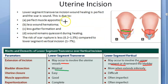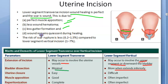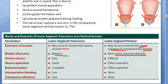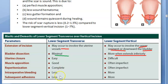The advantages of a transverse uterine incision are: wound healing is perfect; the scar is sound; perfect muscle opposition is achieved; wound hematoma is less; gutter formation is less; the wound remains quiescent during healing because there is no relaxation and contraction; and the risk of scar rupture in a future pregnancy is very low. Uterine closure is easy, muscle opposition is good, reperitonization is complete, intraoperative bleeding is less, and subsequent adhesions are also less, making future operations easier.